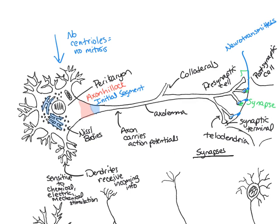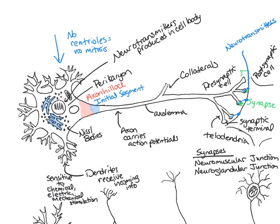If the synapse is between a presynaptic neuron and a muscle cell, it is called the neuromuscular junction. If it occurs between a presynaptic neuron and a gland, it is called the neuroglandular junction. Neurotransmitters are produced in the cell body, bundled into vesicles, and travel through the axoplasm toward the synaptic terminal — a movement called anterograde. Movement from the synaptic knob back to the cell body is called retrograde; viruses like rabies can travel retrograde toward the cell body and cause damage.